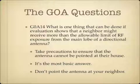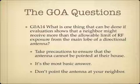What is one thing that can be done if evaluation shows that a neighbor might receive more than the allowable limit of RF exposure from the main lobe of a directional antenna? The answer is take precautions to ensure that the antenna cannot be pointed at their house. It's the same principle as: if you don't want to shoot your neighbor, don't point your gun at your neighbor. To avoid zapping your neighbor with unnecessary RF energy, don't point the antenna at them. Move the antenna so it's not blasting through your neighbor's house.